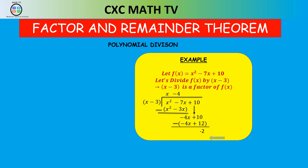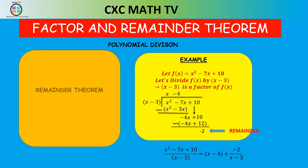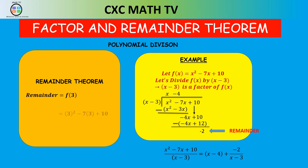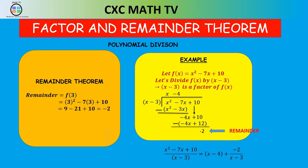To rewrite it in the form that we know: the dividend divided by the divisor equals the quotient (x - 4) plus the remainder -2 over (x - 3). Now look at this — using the remainder theorem, what if you were to just plug 3 into the function? f(3) = 3² - 7(3) + 10, which is 9 - 21 + 10, which is -2 — the same remainder.